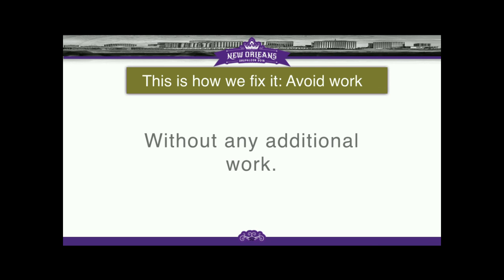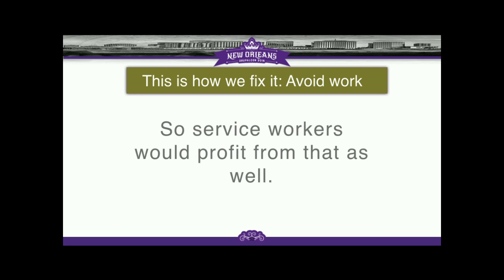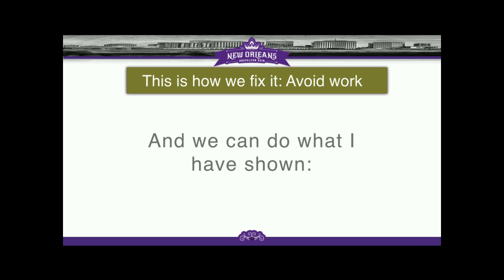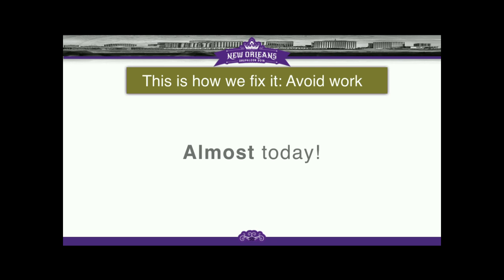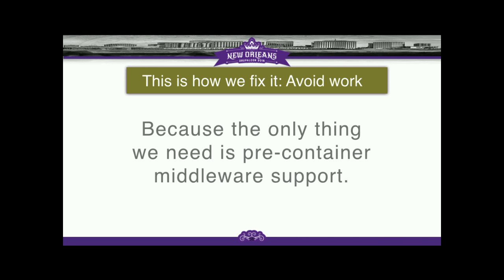Without any additional work or changes, for you as a developer nothing changes. Service workers would profit from that as well. What we can do almost today is there's a five-line patch missing to the Drupal kernel to allow pre-container middleware support. A Drupal request works like this: the request comes in, a kernel is created, and then we go through a middleware chain. But unfortunately, before starting the middleware chain, because middlewares are stored in the container, we have to load the container. Even loading it from APC, it's still so much of an impact that it's slower than the Drupal 7 page cache was, because the container is quite big — it has all our services, even if they are not loaded.